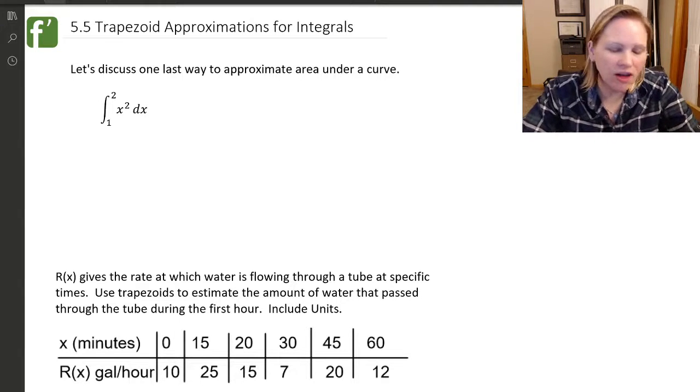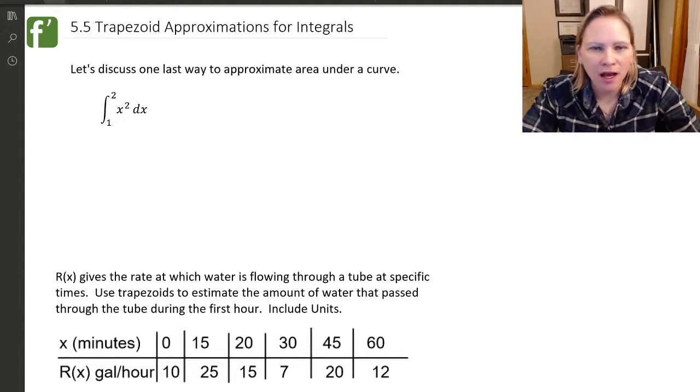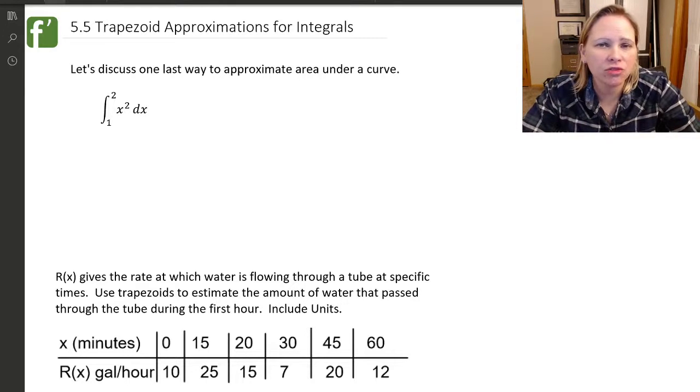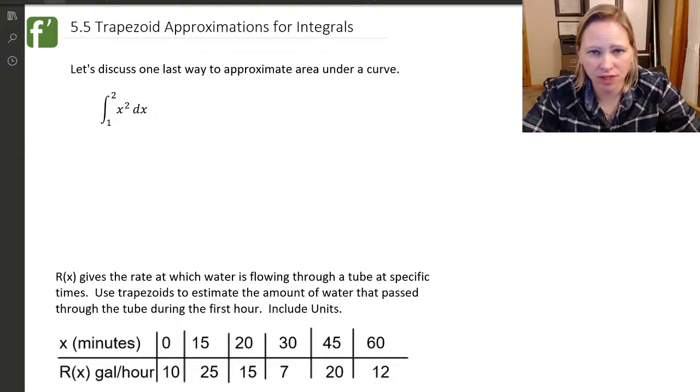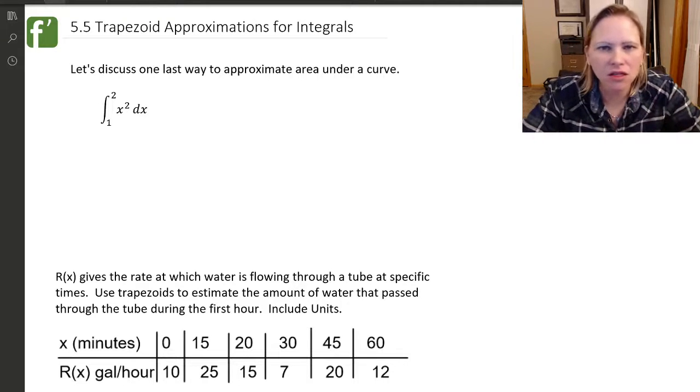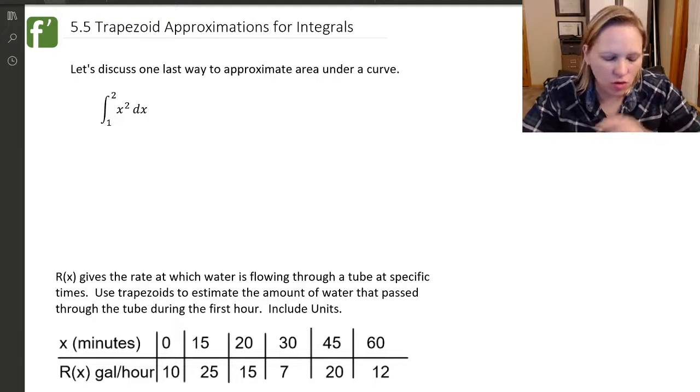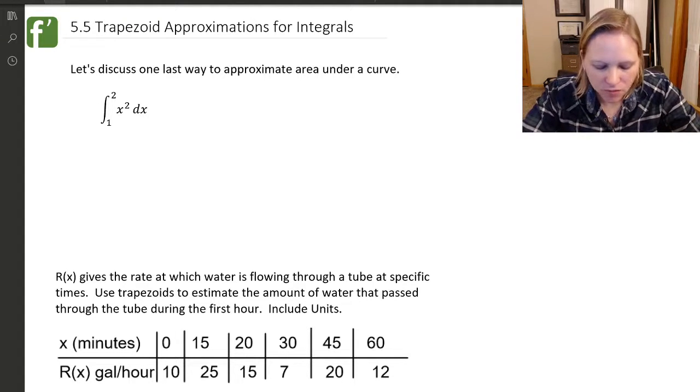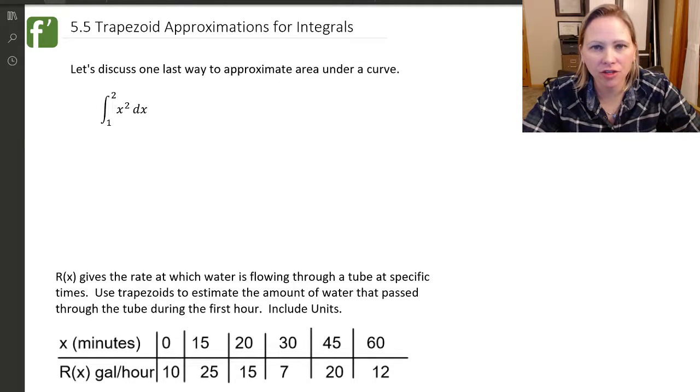Then we talked about how to find the actual value, how to evaluate this integral. We can find the antiderivative and use that fundamental theorem of calculus part 2, which says we take the antiderivative and just evaluate it at the limits of integration and subtract those two numbers.